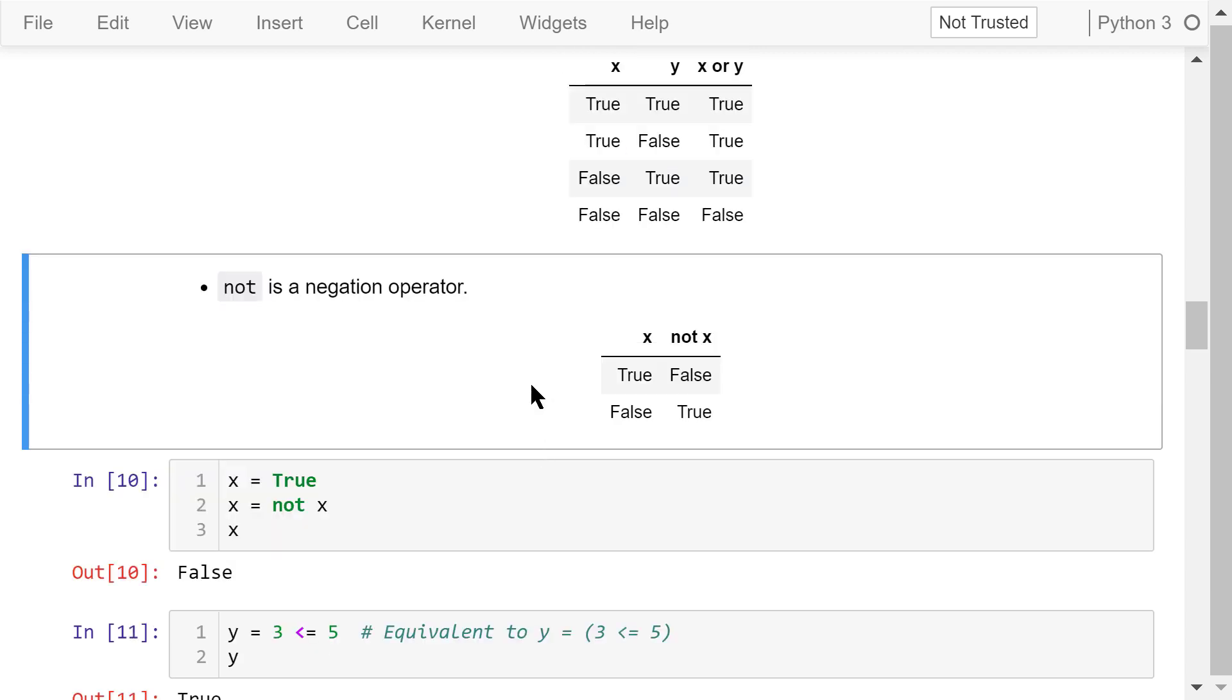NOT is a negation operator. It will change a boolean variable x to its opposite. NOT true means false. NOT false means true.